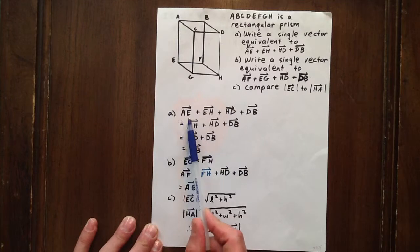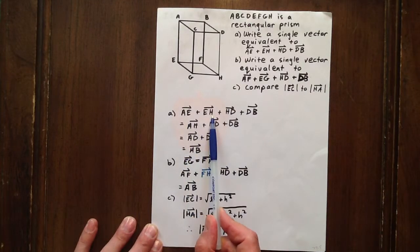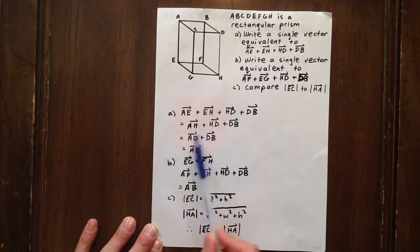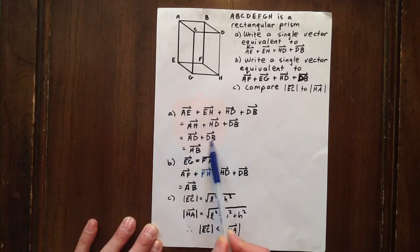Well to start with, AE plus EH is simply AH. AH plus HD is simply AD, and AD plus DB is simply AB.